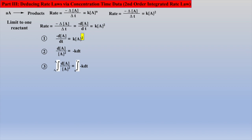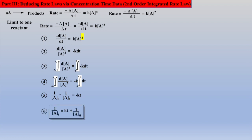We introduce our integral, which is from initial concentration to concentration at some time t, and time from 0 to some time t. We pull our constant out of the integral, and after integration, we get an integrated second-order rate law, which upon rearrangement yields a very useful form of the integrated rate law. Looking closer at equation 6, we see it as a linear equation, where a plot of time on the x-axis versus 1 over the concentration of A on the y-axis will give a straight line.